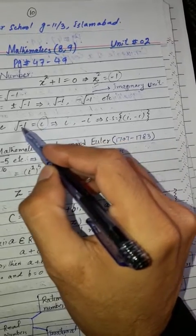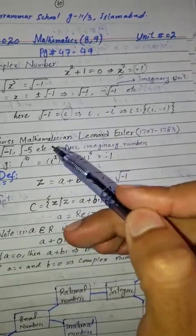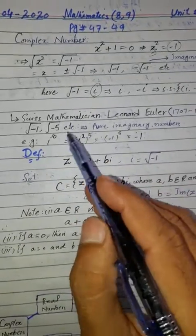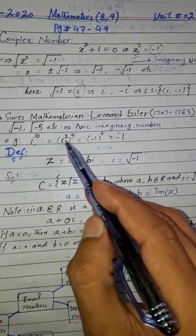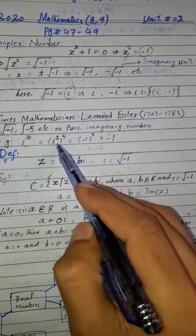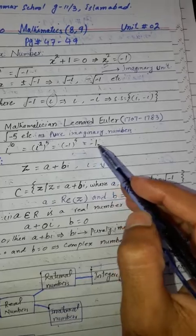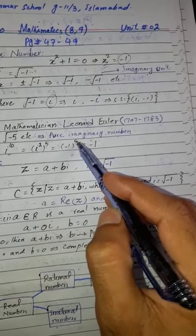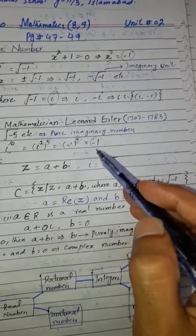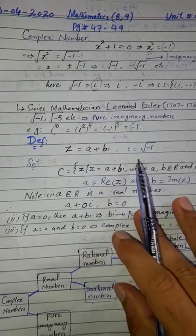Iota squared equals minus 1. So iota to the 10 is iota squared to the power 5, which equals minus 1 to the power 5. Since 5 is odd, the result is minus 1. Clear.